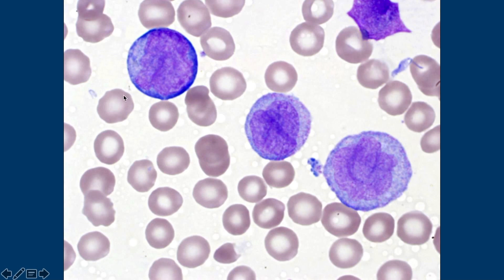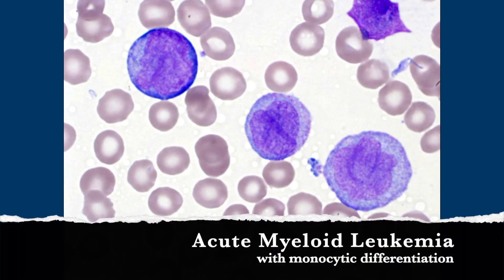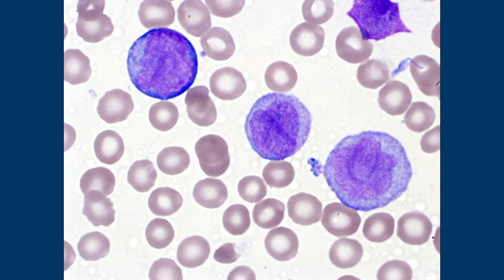Personally I would call that a blast. These are probably your promonocytes — they're considered to be blast equivalents. They're a little bit more differentiated, but blast equivalents in the context of myeloid leukemia with monocytic differentiation. It can be either myelomonocytic or acute monocytic. Either way it's a subcategory of acute myeloid leukemia.